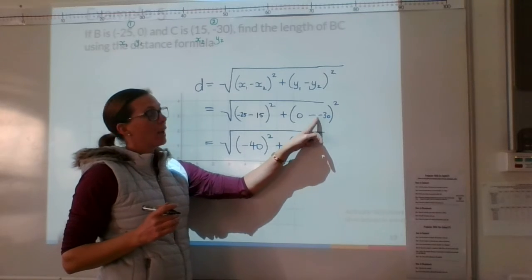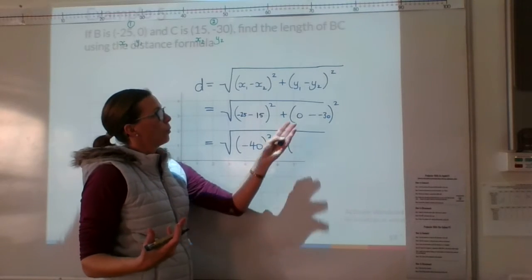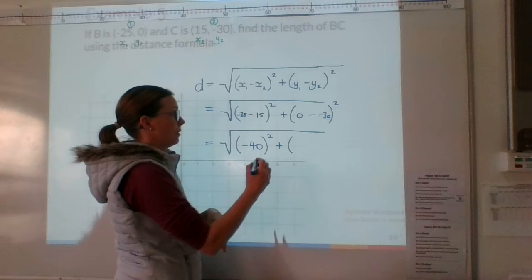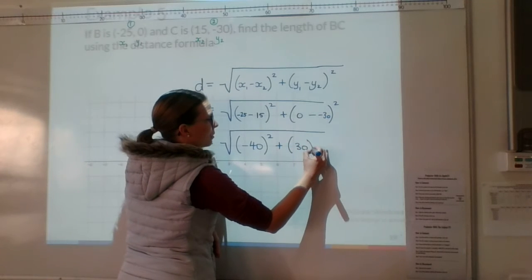Well, taking away a negative is like adding. Okay. So we've said 0 plus 30. So 30 squared.